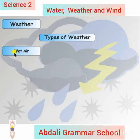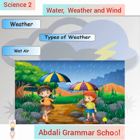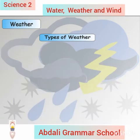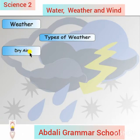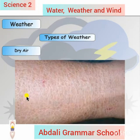The fifth type of air is wet air. The air can be wet, as in the rainy season. The last type of air is dry air. The air can be dry, as in winter, which makes our skin dry.